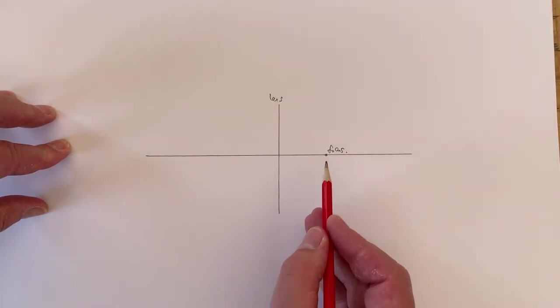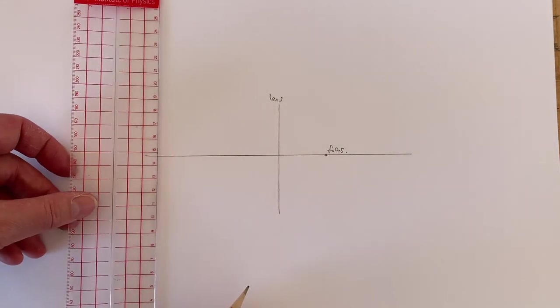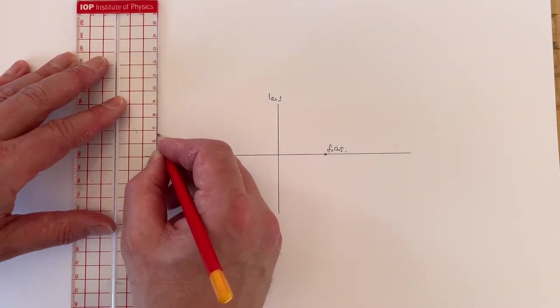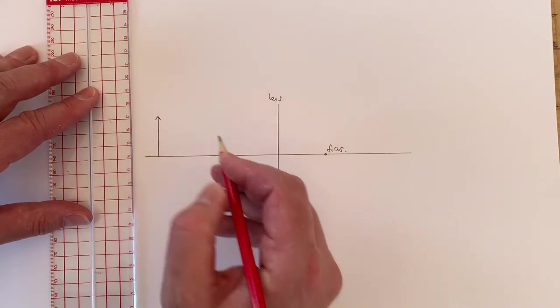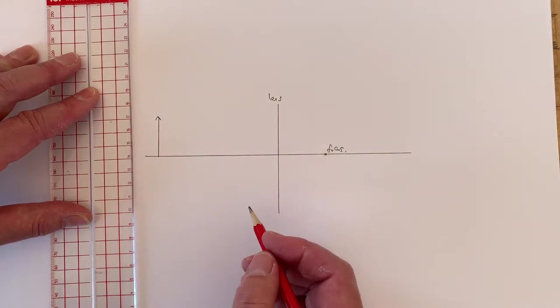And as you can see, I've drawn the focus on the right-hand side of the lens. Now, I'm going to consider what happens when I've got an object on the left which is much further away from the lens than the focus. So, this distance is very much greater. It's more than twice the distance of the focus from the lens.